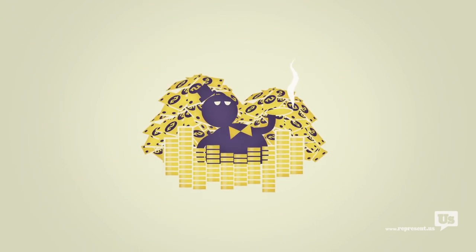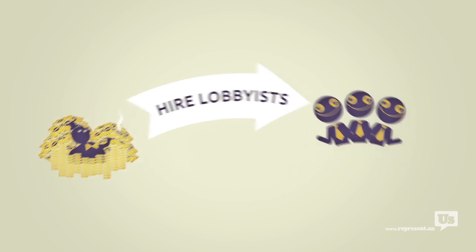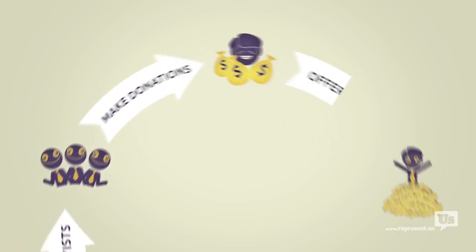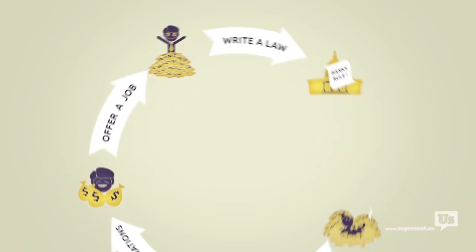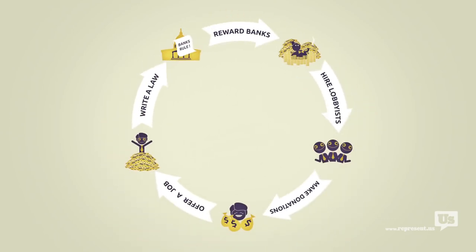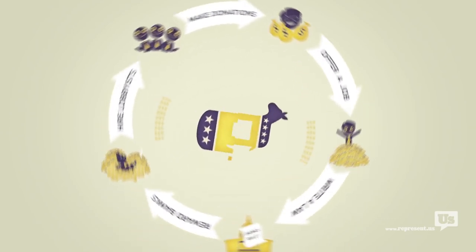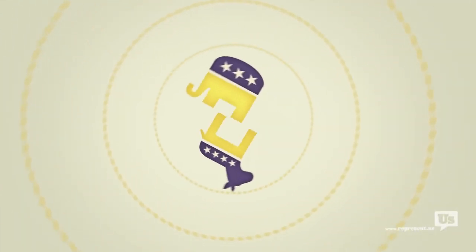This is how a bill becomes a law. A special interest hires some lobbyists. Those lobbyists collect campaign contributions, offer jobs, and then write the laws that Congress then passes to help those same special interests. This happens every day, on every single issue, with politicians of both parties.